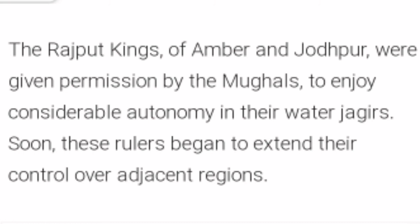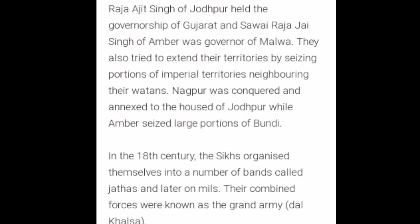Murshid Quli Khan transferred all Mughal Jagirdars to Orissa in order to reduce Mughal influence in Bengal, and ordered a major reassessment of Bengal's revenues. Revenue was collected in cash with great strictness from all zamindars. The Rajput kings of Amber and Jodhpur were given permission by the Mughals to enjoy considerable autonomy in their Vatan Jagirs. Raja Ajit Singh of Jodhpur held the governorship of Gujarat, and Sawai Raja Jai Singh of Amber was governor of Malwa.